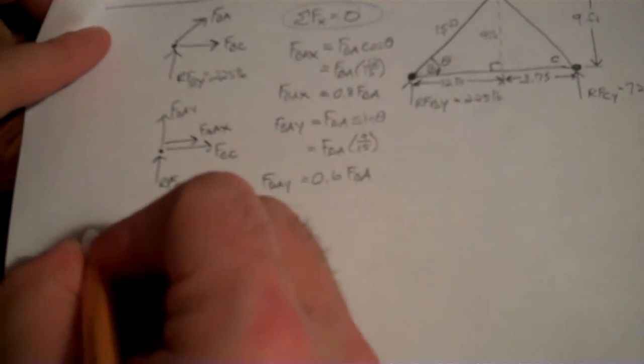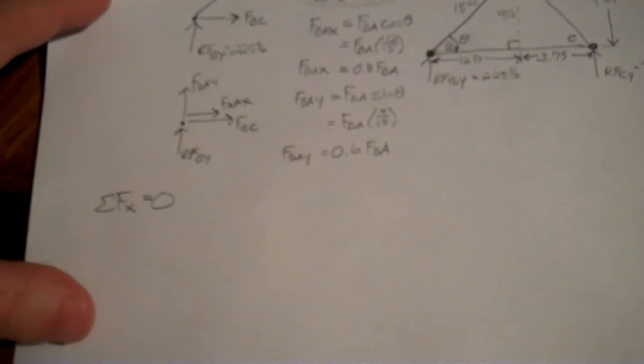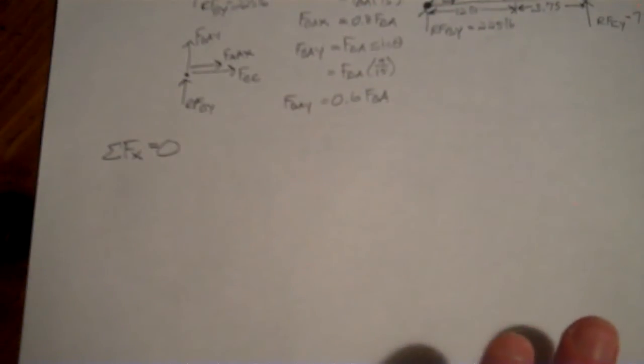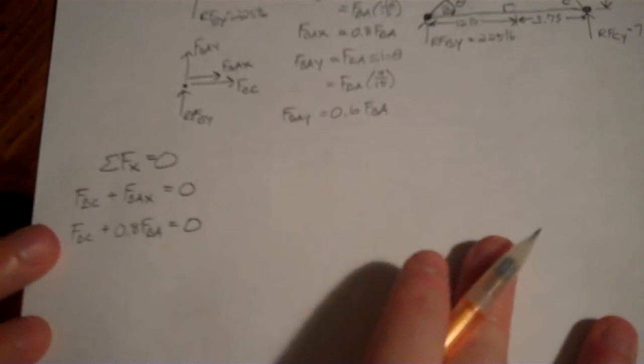So let's give ourselves some room for that. Sum of the forces in the X, for this case, have to equal 0. They always equal 0. Everything always equals 0 because this thing is not moving. All right, so if that's true, my FBC plus my FBA X has to equal 0. Now I don't know what either of these are yet. I can actually substitute a little bit, since we found out FBA X is actually 0.8 FBA, and we'll eventually have to find FBA. But I don't know either of these, so I can't really go any farther with that equation.